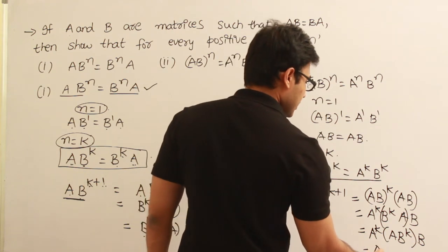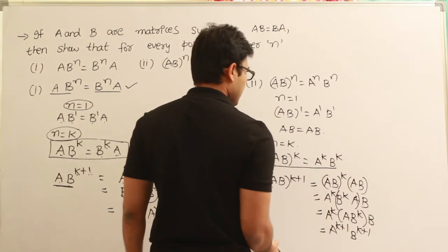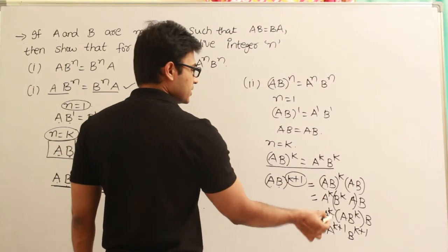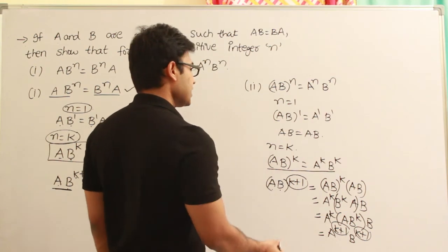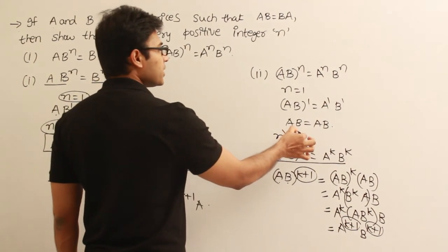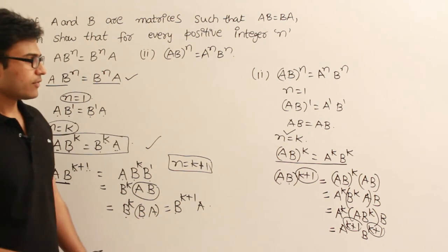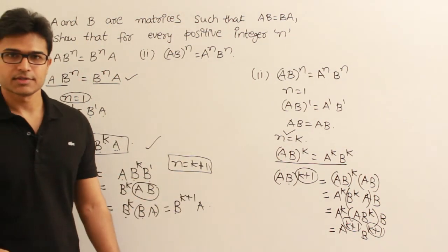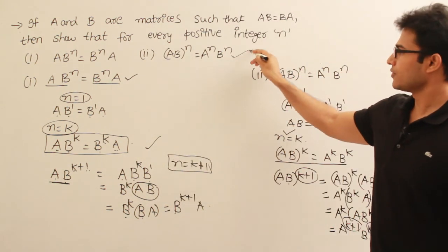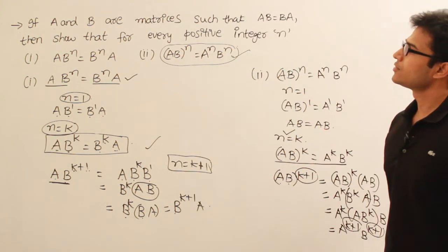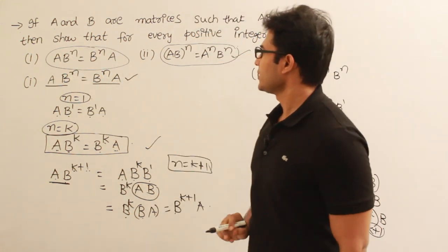That gives us A power K plus 1 into B power K plus 1. Therefore AB power K plus 1 equals A power K plus 1 into B power K plus 1, meaning if we assume it is true for n equal to K, it is also true for n equal to K plus 1. Therefore, by mathematical induction, this second rule is also true. By mathematical induction, we have shown that both statements are true.